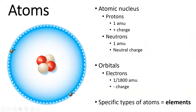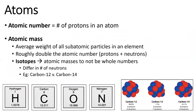Specific types of atoms are described as elements. Looking at the periodic table, each element has an atomic number, which gives you the number of protons in that atom. The atomic mass is the average weight of the subatomic particles in the element, and it is usually equal to the number of protons plus the number of neutrons in an atom.